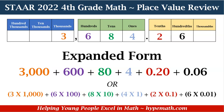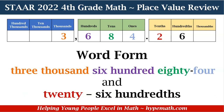Now let's look at the word form. For the word form, we have three thousand, six hundred eighty-four — and. One thing I want to mention: whenever we see a decimal point, when we are saying the number, the decimal point means we need to say 'and,' because that tells the listener there's a decimal and there are decimal place values in this number as well.